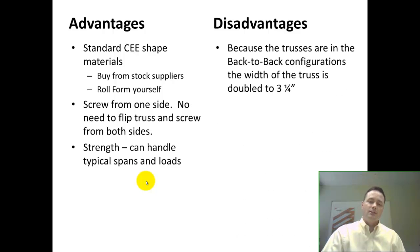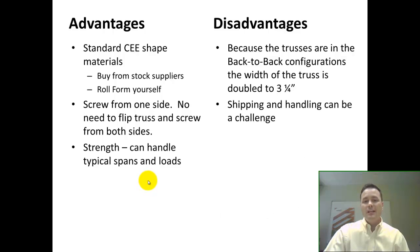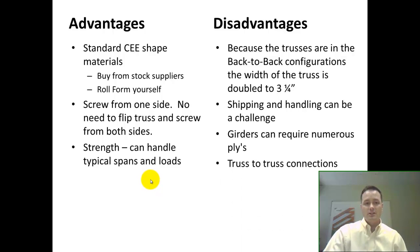Now some of the disadvantages are, because they're in the back-to-back C configuration, the width of the truss is doubled to about three and a quarter inch. Also, because they are three and a quarter inch wide, it is kind of a challenge for shipping and handling. The girders can require more numerous plies and can be a challenge for truss-to-truss connections.